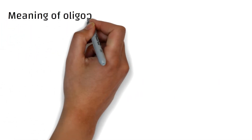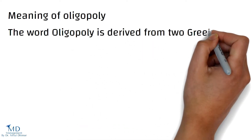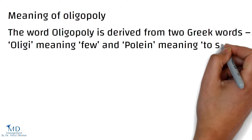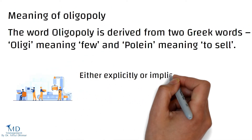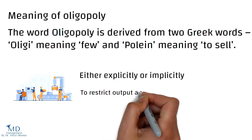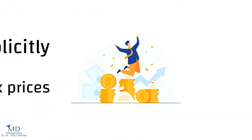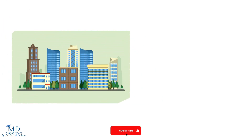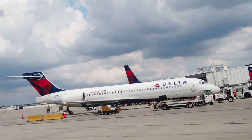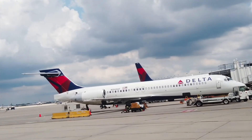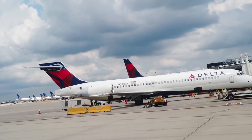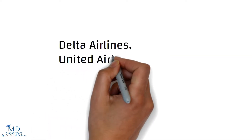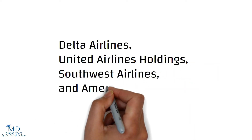The word oligopoly is derived from two Greek words: 'oligi' meaning few, and 'polyan' meaning to sell. The term oligopoly refers to a small number of producers working either explicitly or implicitly to restrict output and/or fix prices in order to achieve above-normal market returns. Oligopoly arises when a small number of large firms have all or most of the sales in an industry. For example, with just four companies — Delta Airlines, United Airlines Holdings, Southwest Airlines, and American Airlines — controlling nearly two-thirds of all domestic flights in the US as of 2021, the airline industry is considered an oligopoly.